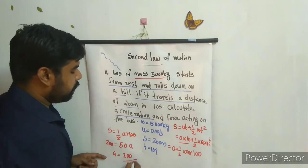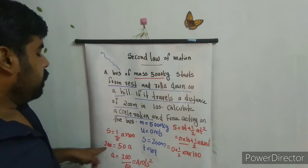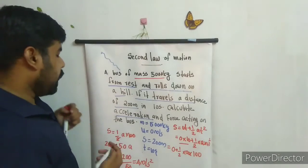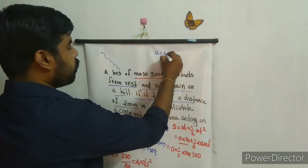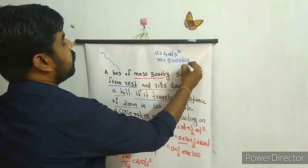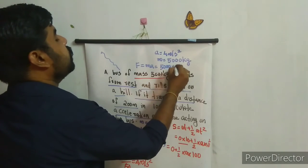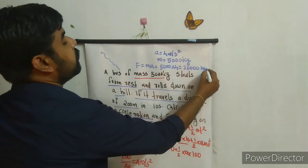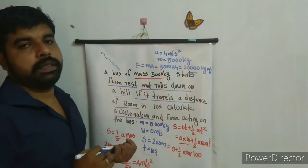We have acceleration a equals 4 meter per second square and mass m equals 5000 kilogram. So force F equals m into a equals 5000 into 4 equals 20,000 Newton. Thank you.